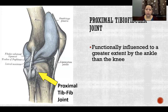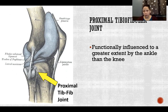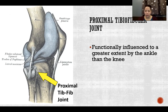The proximal tibiofibular joint is actually functionally influenced to a greater extent by the ankle than the knee. It is still affected by the other joints of the knee because they share a large joint capsule — anytime more than one joint is inside a joint capsule, one joint's function will affect the others. But the proximal tibiofibular joint is very much affected by the movement and function of the ankle joints, and an ankle injury could potentially lead to injury or dysfunctional movement of it.